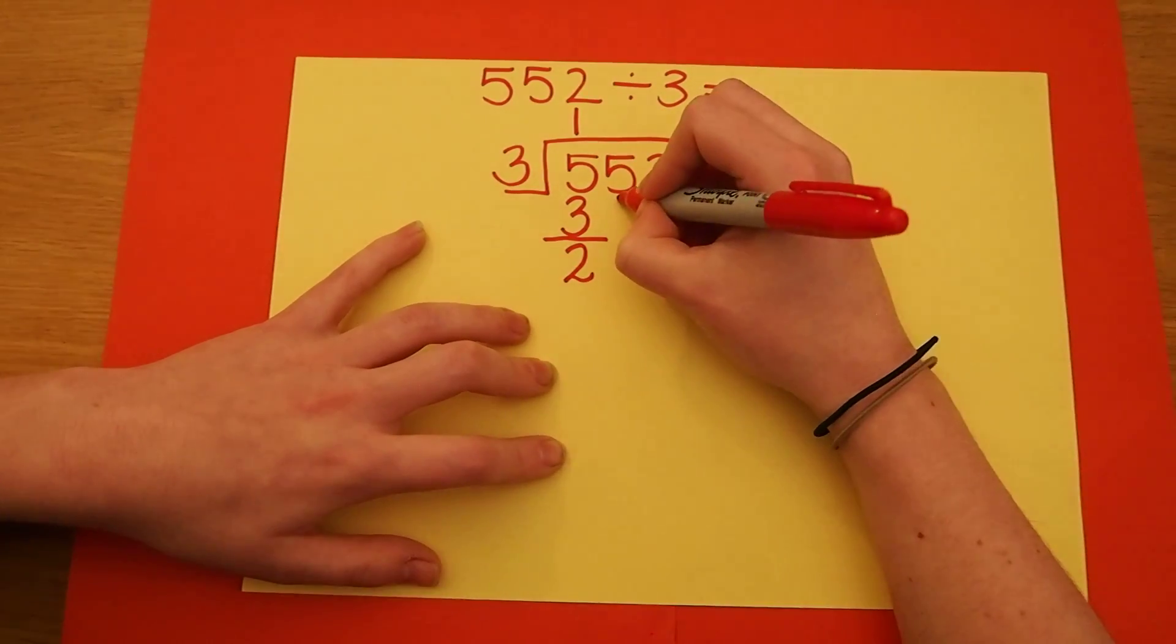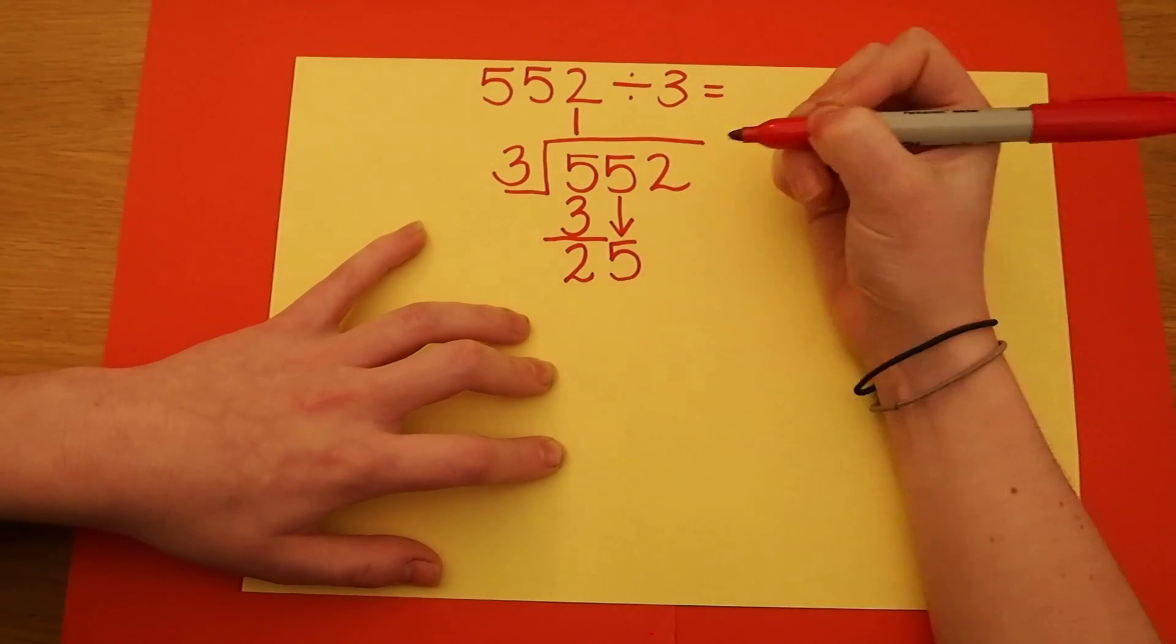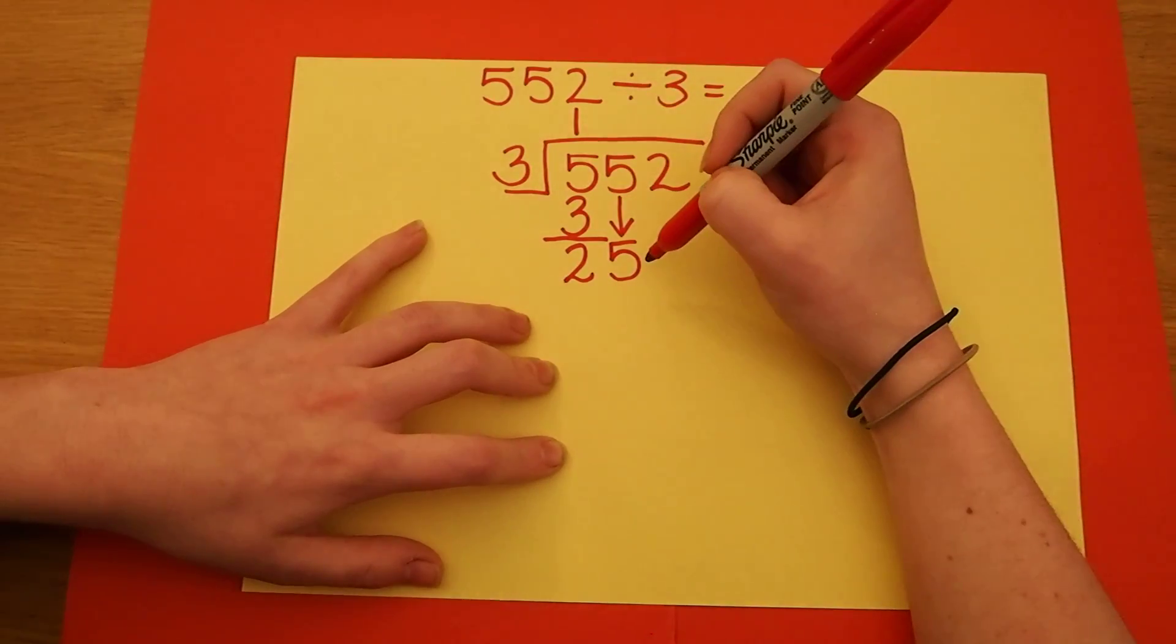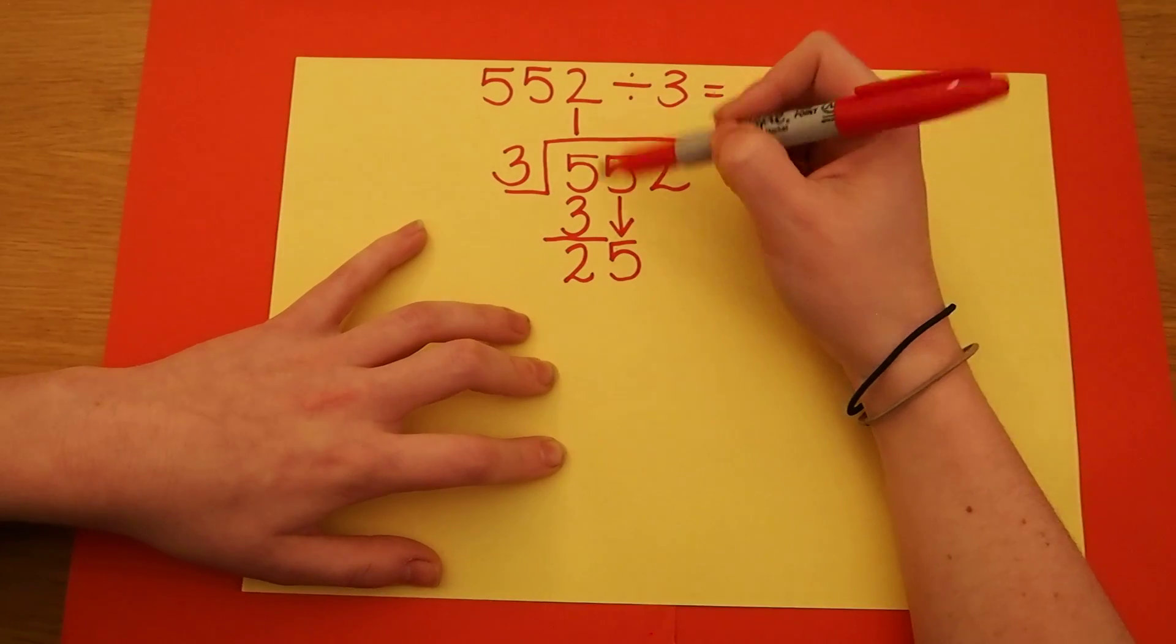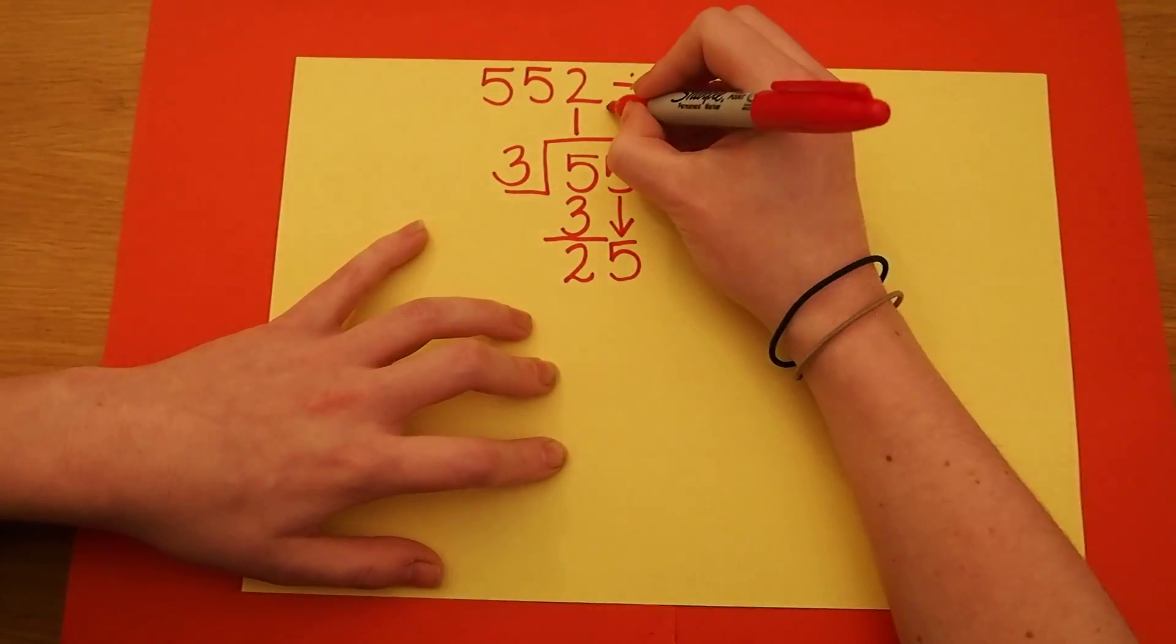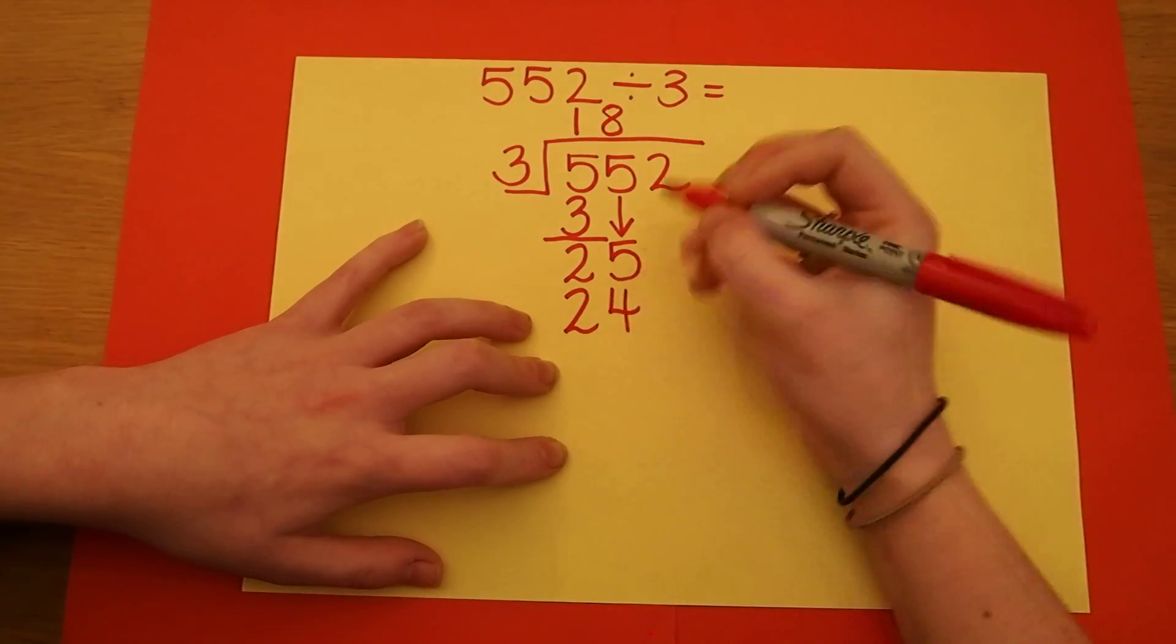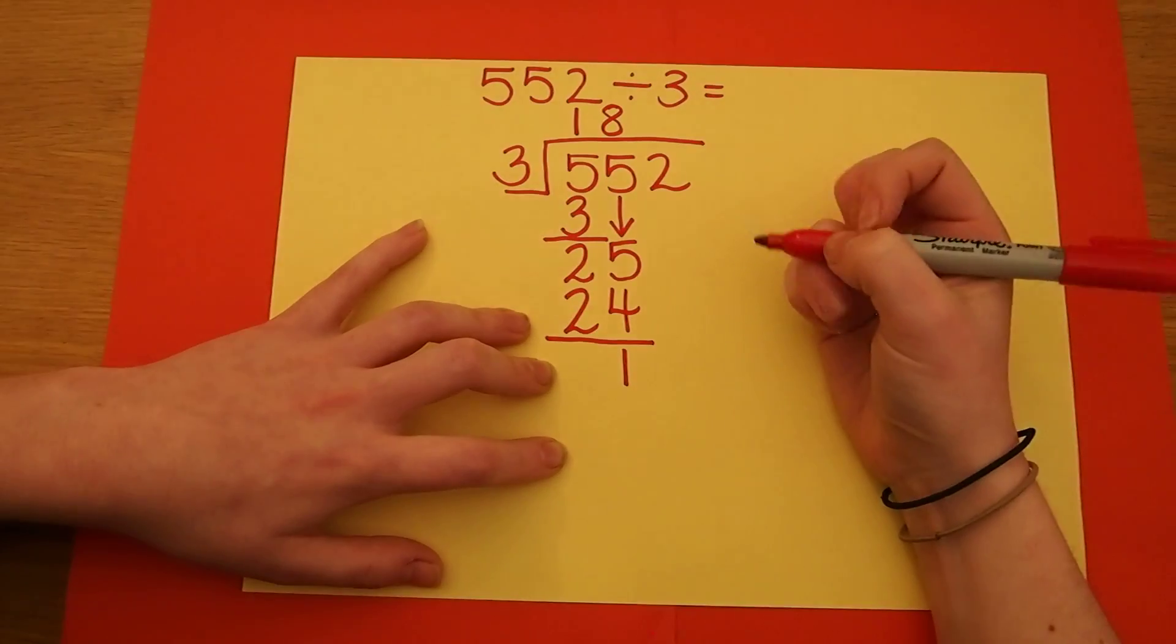I carry on by bringing down the 5. Now I need to think how many 3's go into 25. 3 times 8 is 24, that's the closest I'm going to get with my 3 times table. When I take them away, I get left with 1 as a remainder.